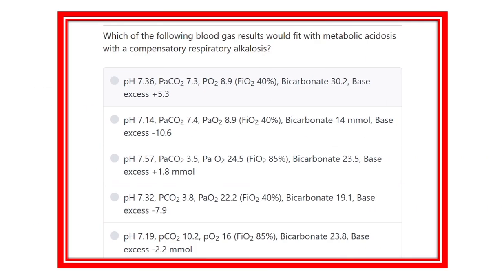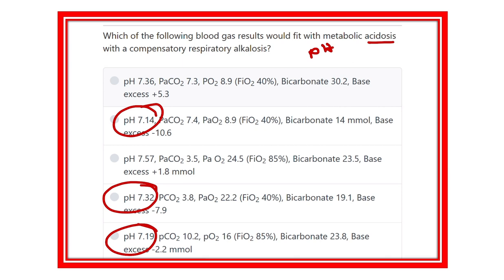To find the answer: first, pH should be reduced. We identified three options with reduced pH — 7.14, 7.32, and 7.19. Since this is metabolic acidosis, we now need to find the option where bicarbonate is reduced below the normal level. The normal bicarbonate level is 22 to 28.